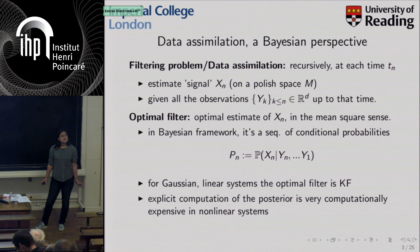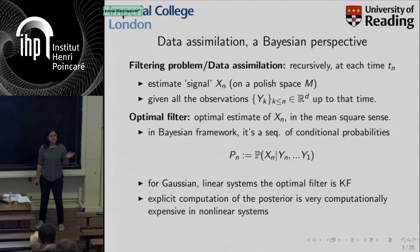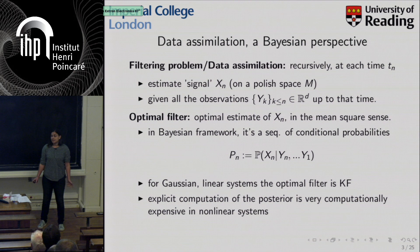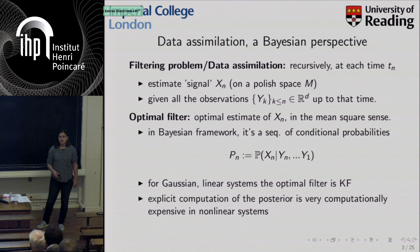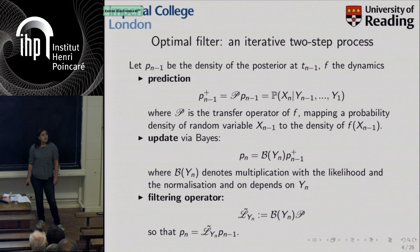In the most broad sense, the filtering problem is estimating the signal X_N given all observations Y_N up to that time, iteratively. By optimal filter we mean the estimate in the mean square sense, which in the Bayesian framework gives rise to a sequence of conditional probabilities — the probability of X_N given all observations up to Y_N. For linear Gaussian priors and errors and linear systems, the Kalman filter is the optimal filter, but for nonlinear systems the explicit computation of the posterior is much more difficult and can be computationally expensive.